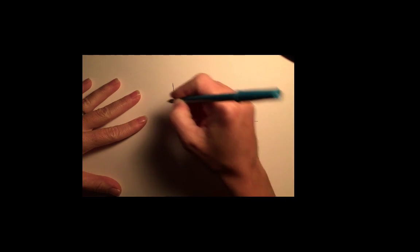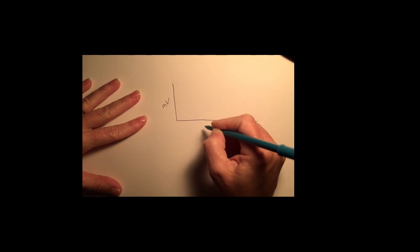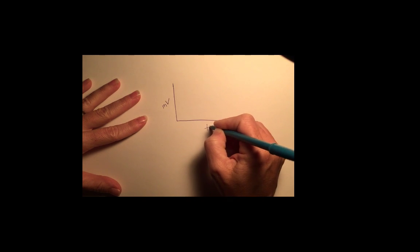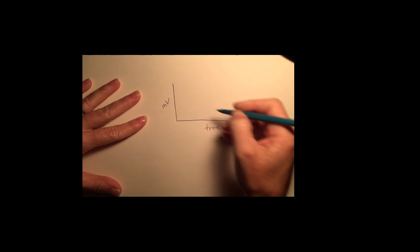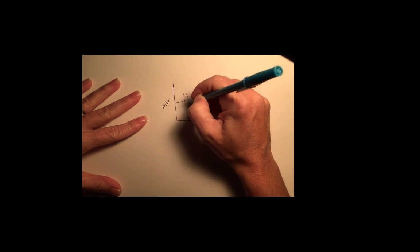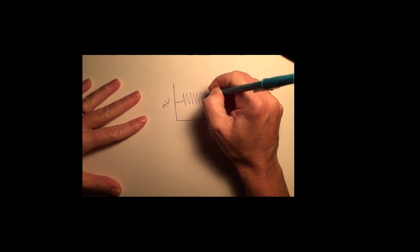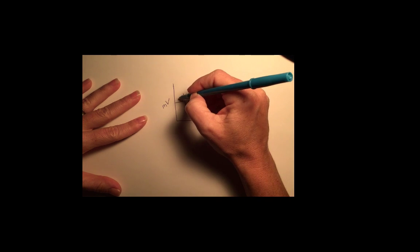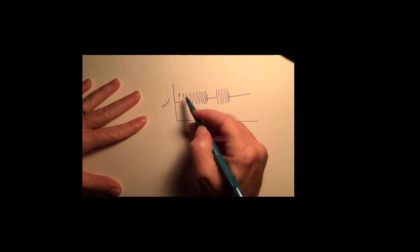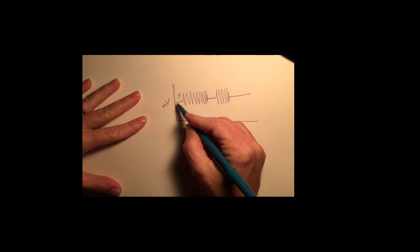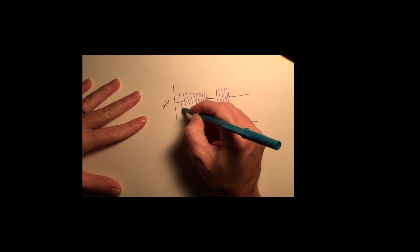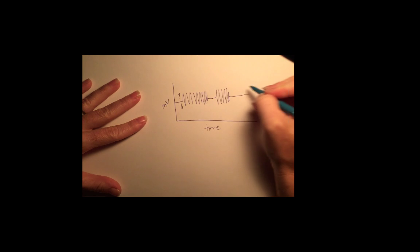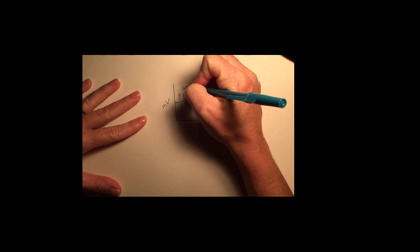Any graph that you have, for example an EMG which is millivolts over time, any graph that has a waveform with varying amplitude. So the amplitude is the movement in the y-axis, moving up or moving down. So this is amplitude.